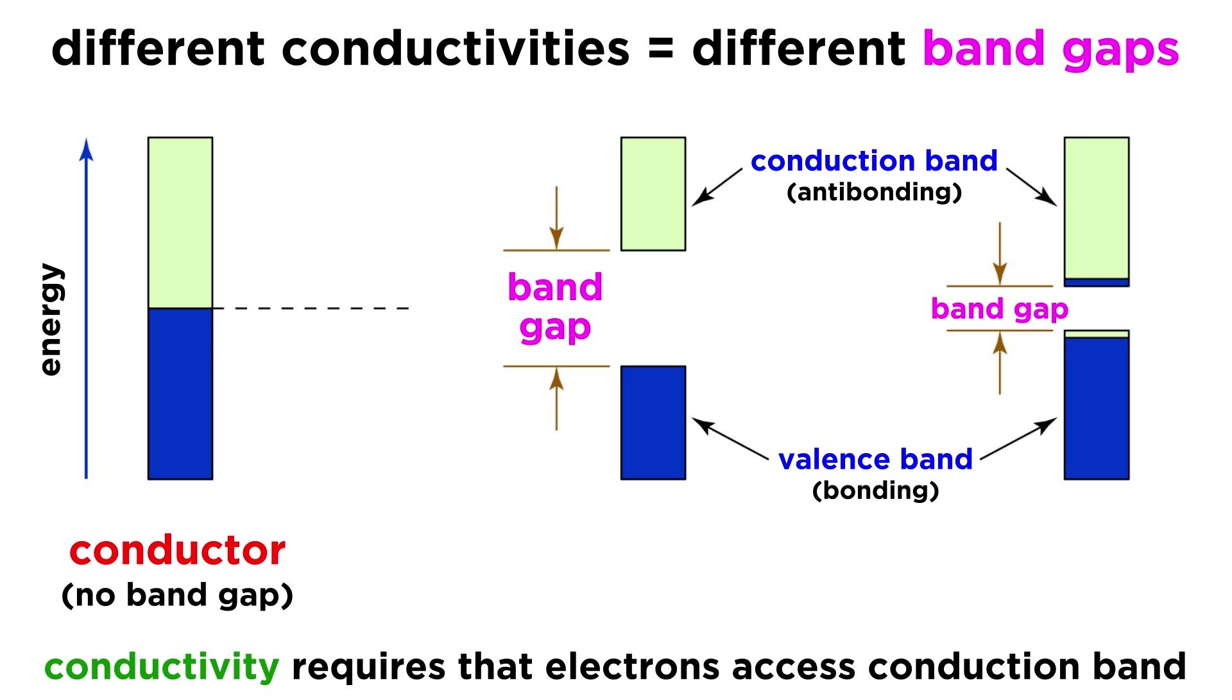Conductors, as we said, have no band gap or just a tiny one, so electrons can flow easily. Insulators have large band gaps, which do not allow for a current to form.